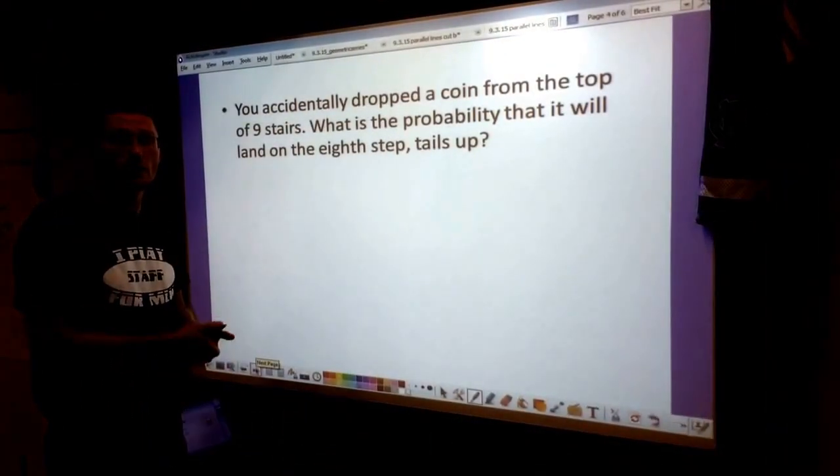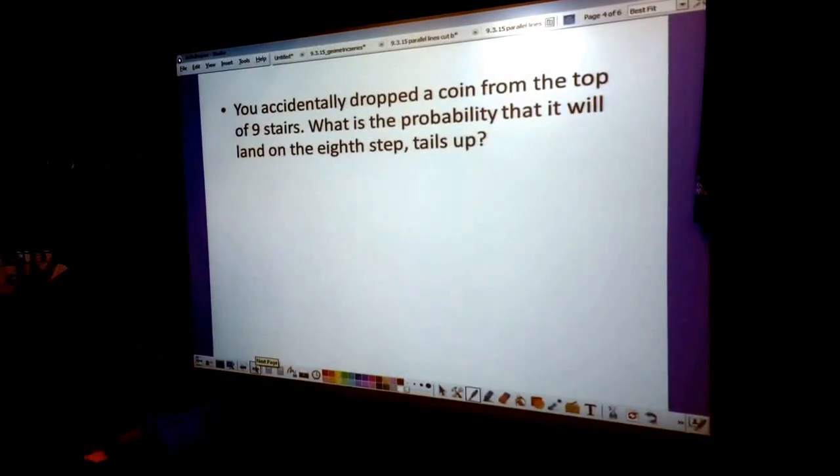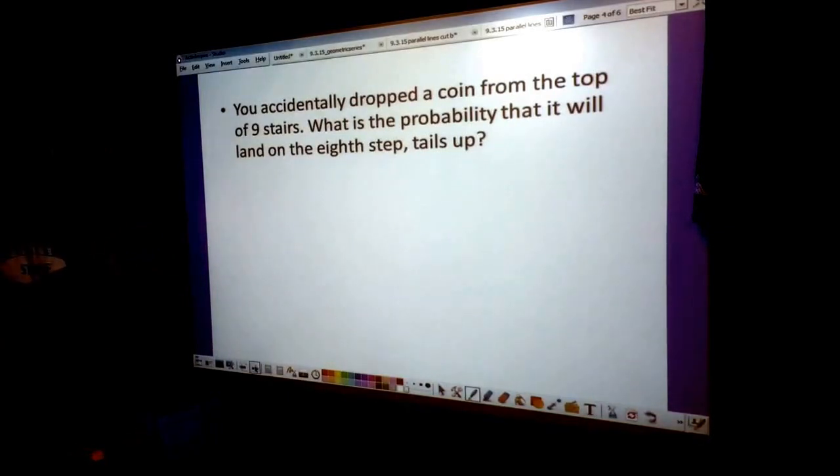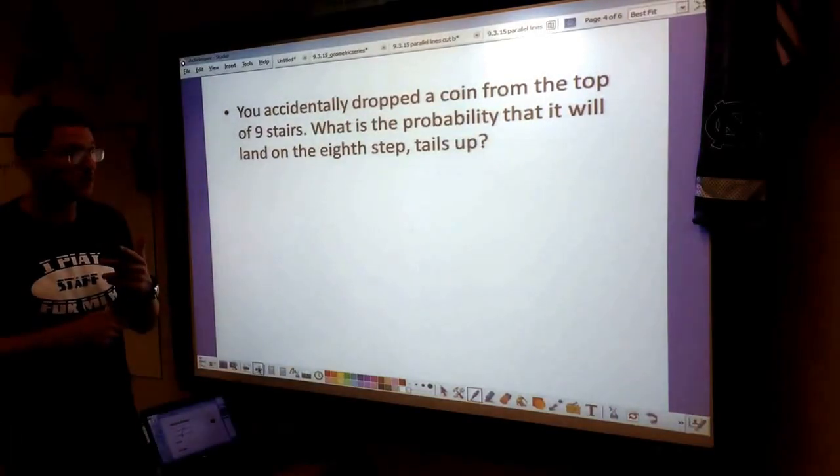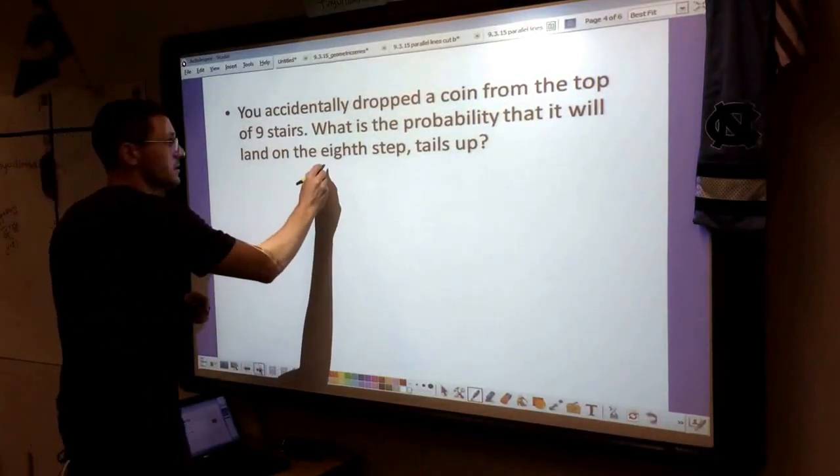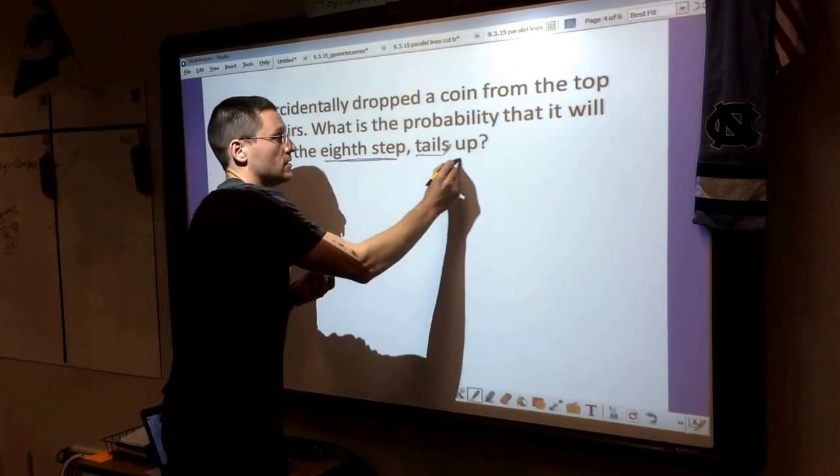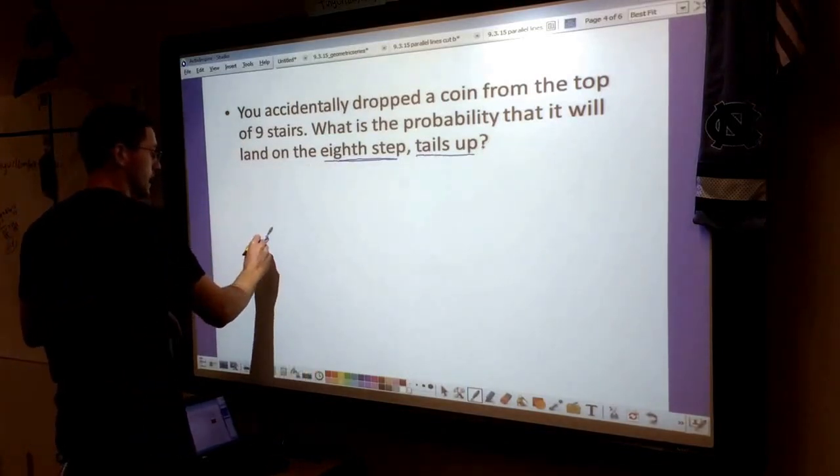Okay guys, just another problem, same sort of idea as Mr. Bakke did in that last one, just to get more practice. This one starts with: you accidentally dropped a coin from the top of 9 stairs. What is the probability that it will land on the eighth stair, tails up? There's two different events in here, same thing as before. First, it needs to land on the eighth step. Second, it needs to land tails up.